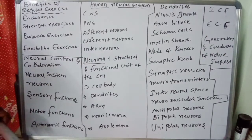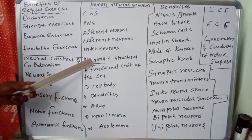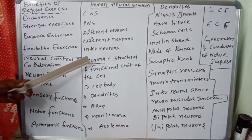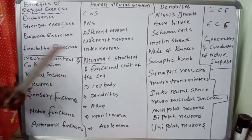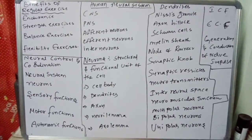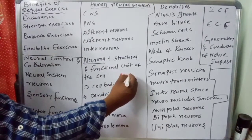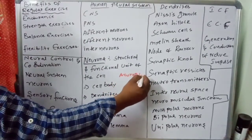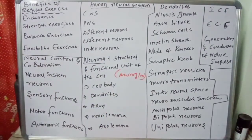An important point: neurons are supported by special non-nervous cells called glial cells, known as Neuroglia. These are the supporting cells for neurons. Neuroglia cells are very helpful in supporting the neurons.